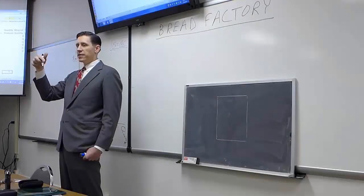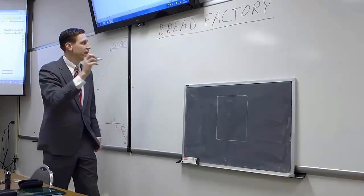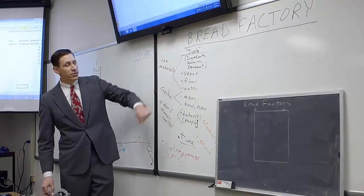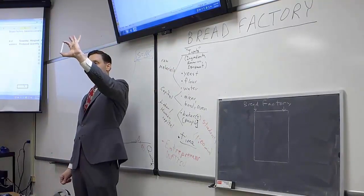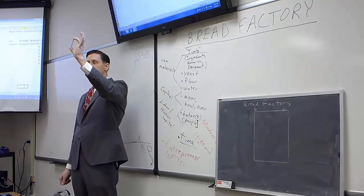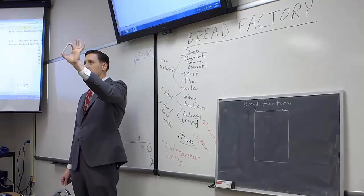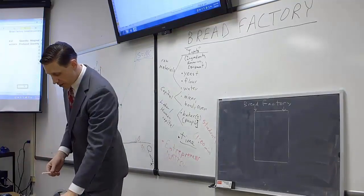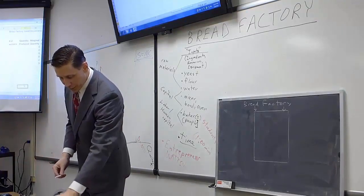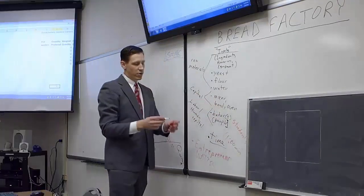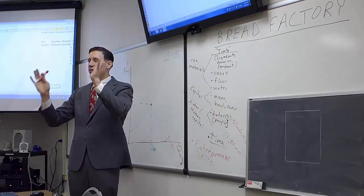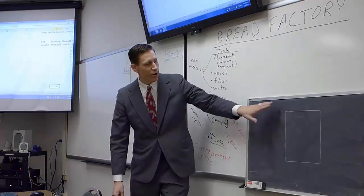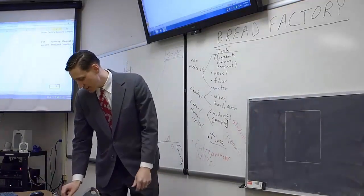The raw materials are represented by the piece of chalk — representing flour, water, yeast, eggs, and so on that are mixed together and baked into bread. The workers will be given the chalk to make the bread. The mixing bowl, oven, building, equipment, supplies, and electricity are all represented by the space on the board, which represents the factory itself. All bread production must take place within the factory space.